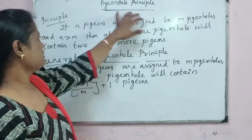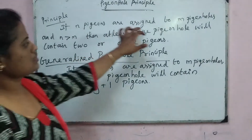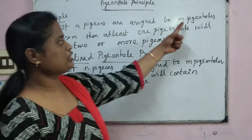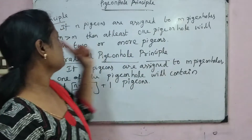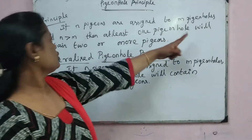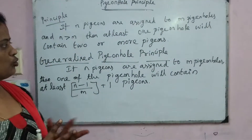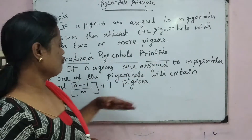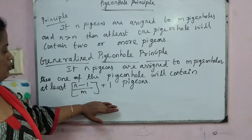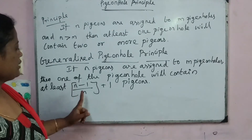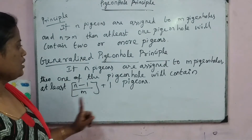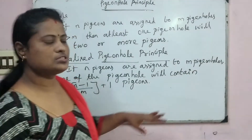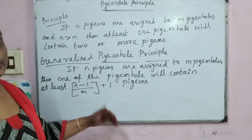What is the Pigeonhole Principle? If N pigeons are assigned to M holes, where N denotes the pigeons and M denotes the holes, then at least one hole will contain two or more pigeons. This is your principle. The generalized Pigeonhole Principle formula is: ceiling of (N minus 1) divided by M, plus 1, where N is the number of pigeons and M is the number of holes.